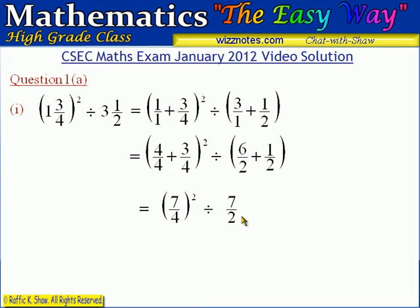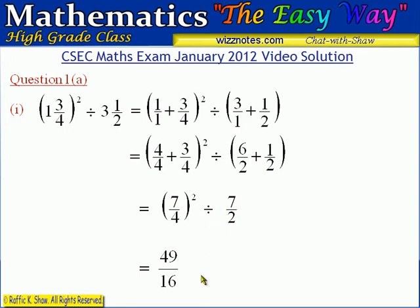Remember, to divide by a fraction is the same as to multiply by the inverse of that fraction. So this term becomes 49 divided by 16, because 7 squared is 49 and 4 squared is 16. Then to divide by 7 over 2 is to multiply by the reciprocal of 7 over 2, which is 2 over 7.